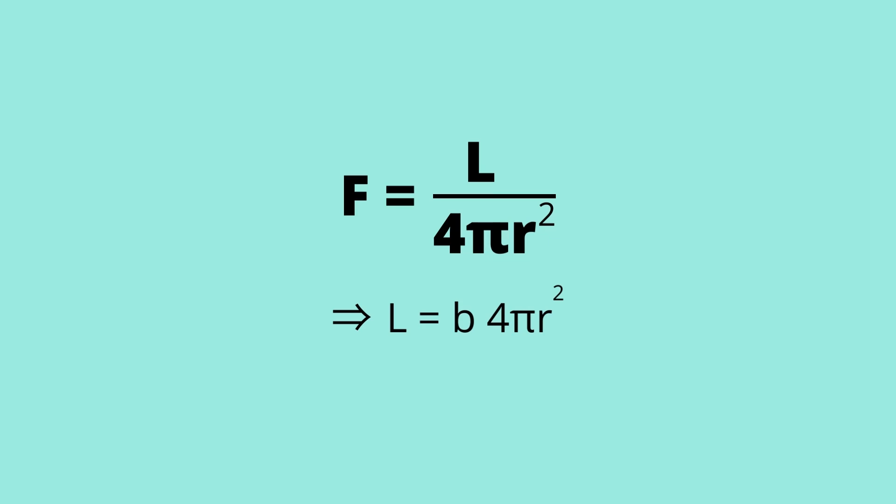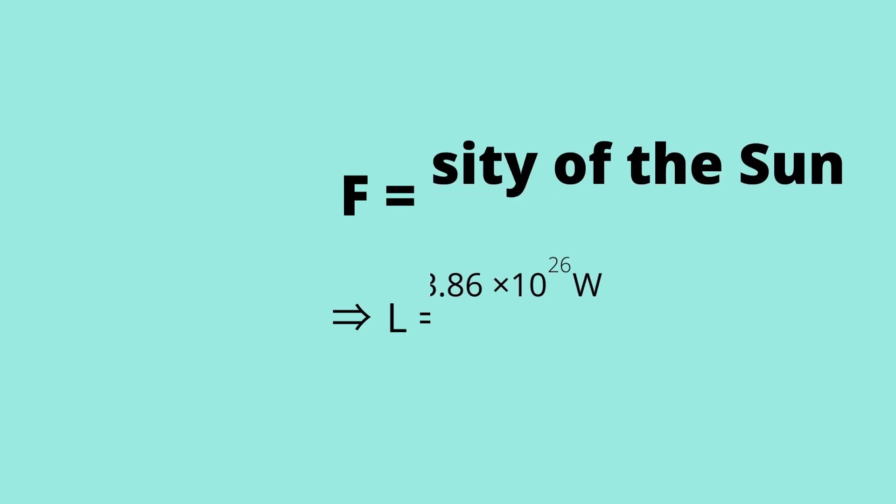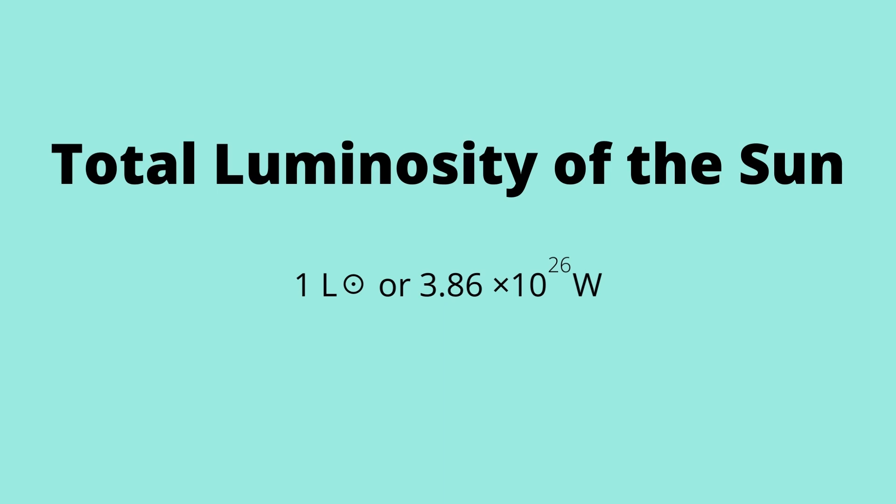The simple formula for flux is luminosity upon the surface area of earth, that is 4 pi r squared. You might wonder how do we get the luminosity of the sun as we are trying to find just that. Let's take the example of solar panels. The energy that is trapped inside one solar cell can be calculated, and thus we can get the flux of that area. The luminosity becomes the flux times the surface area of earth. In this way, we can find the total luminosity of the sun and that comes out to be around 3.86 times 10 to the power 26 watts. In astronomy, values of luminosity are often given in terms of luminosity of the sun. It is taken as a reference just as we saw in the case of the astronomical unit.